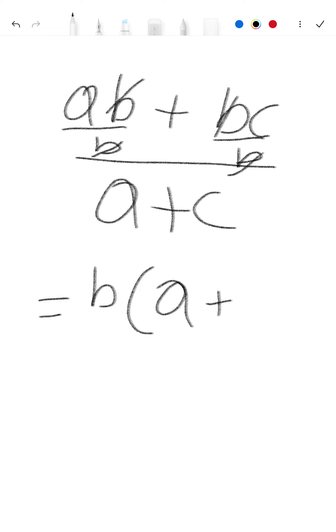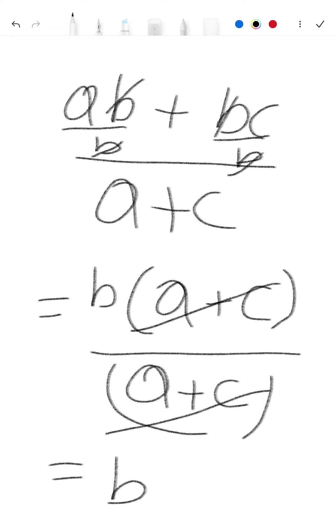Now here b to b also cuts, so we have c, and below is a + c. Now we cancel a + c over a + c, and this equation simplifies. The answer is b.